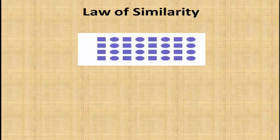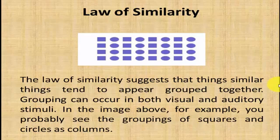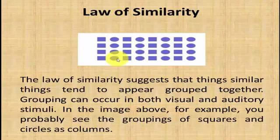The law of similarity suggests that similar things tend to appear grouped together. Grouping can occur in both visual and auditory stimuli. In the image, you probably see the grouping of squares and circle columns — the squares seem to be in a separate group and the circles seem to be in a separate group. Things similar to each other appear as grouped together.